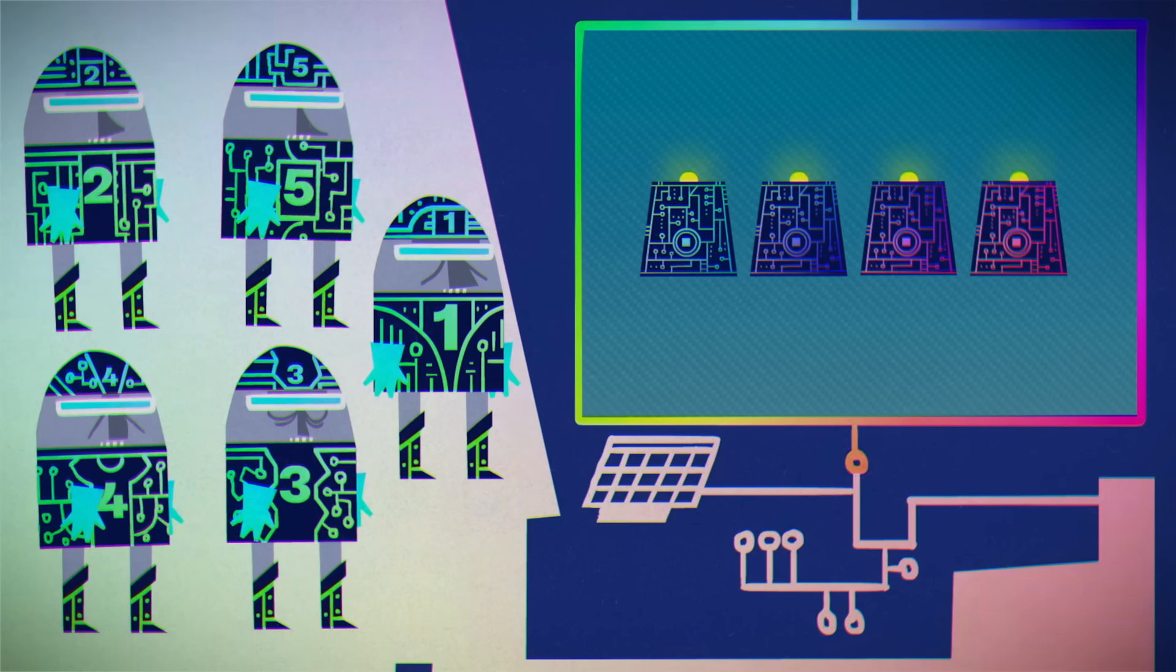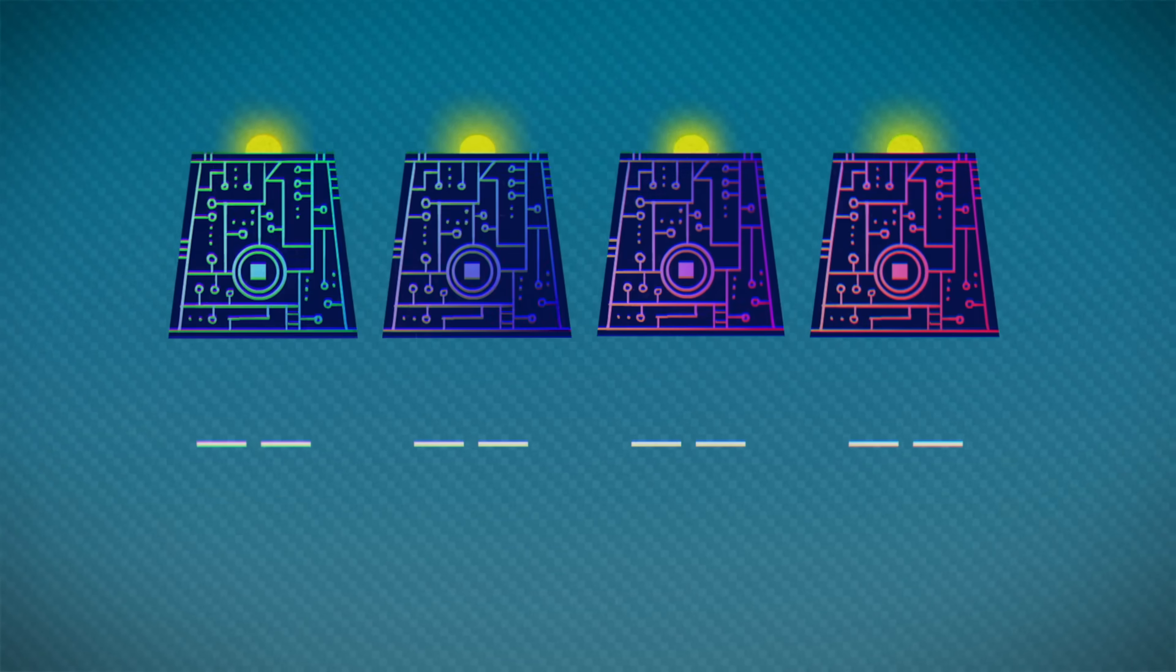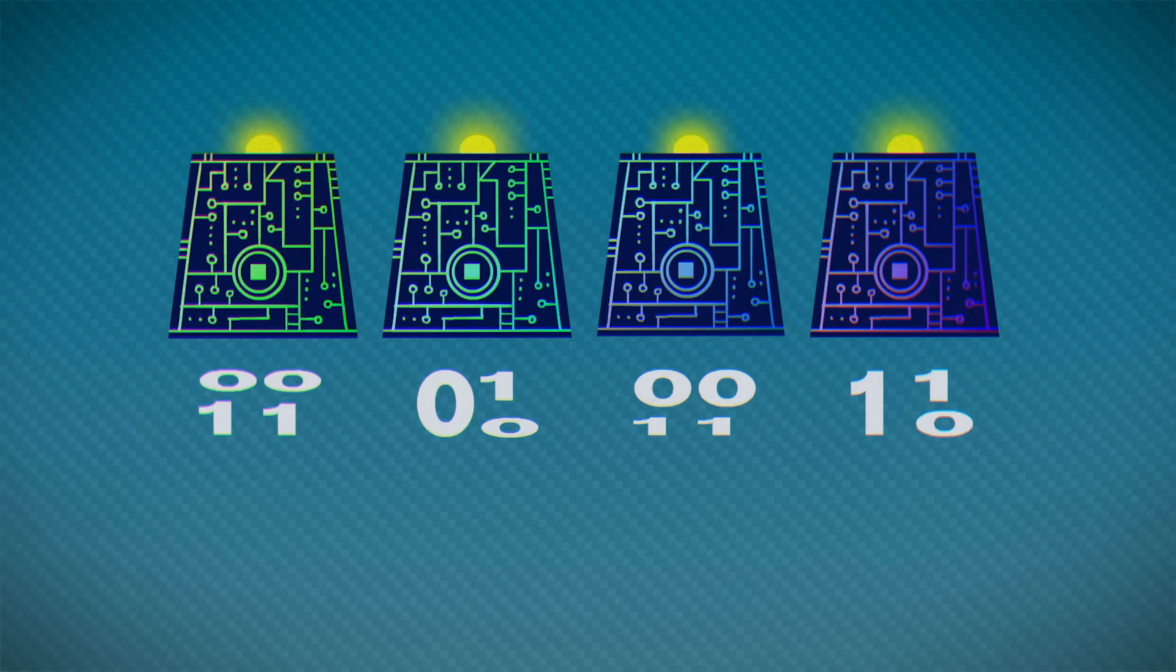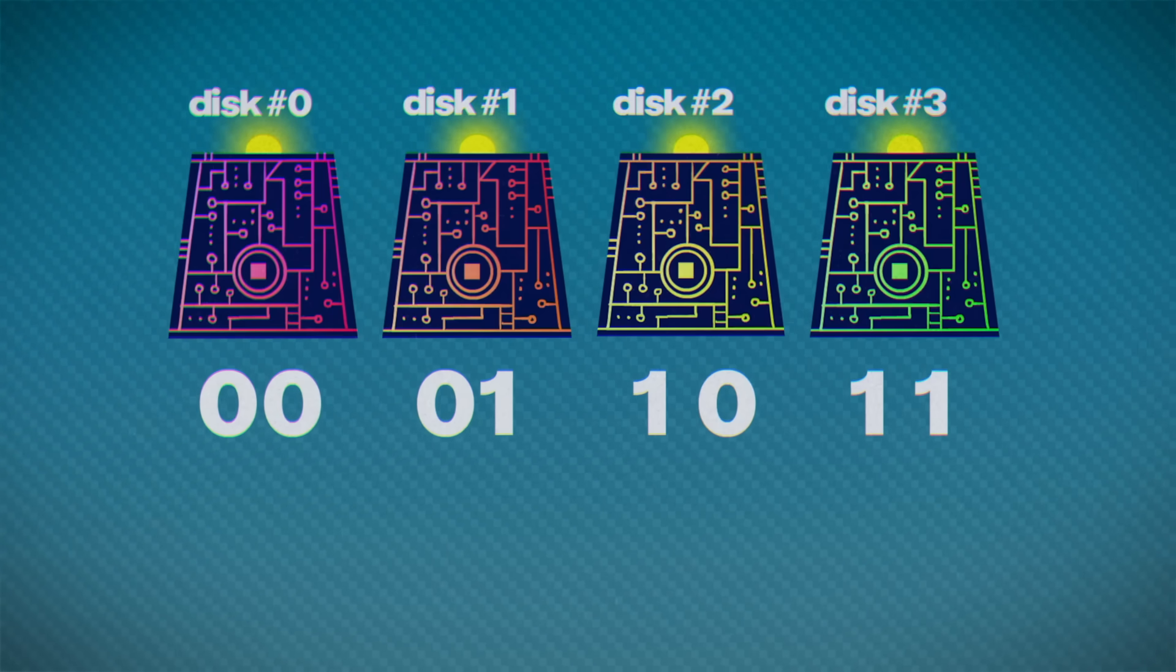The setting is a big clue for one solution. Using binary code—the base-two numbering system that only uses ones and zeros—we can represent each of the four disks with a two-bit binary number, ranging from zero-zero for zero to one-one for three.